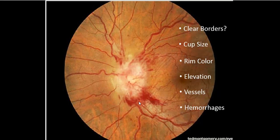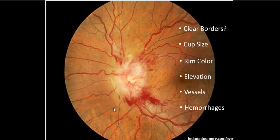Hemorrhages: this reddish color that we're seeing out here is hemorrhage. It's not a vessel going anywhere — you can see there's no path that it continuously takes. This also would be a hemorrhage, and so would this area. Sometimes it's difficult to tell whether what you're seeing is a vessel or a hemorrhage, even for the ophthalmologist. But we see clear examples of hemorrhage in this picture. And exudates — this lesion over here may be a form of exudate, something that's there that shouldn't be. So this is clearly an abnormal optic nerve.